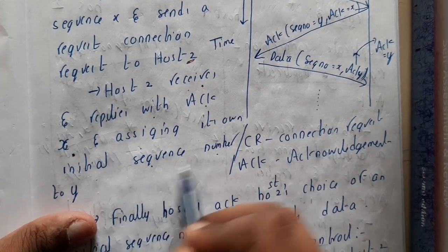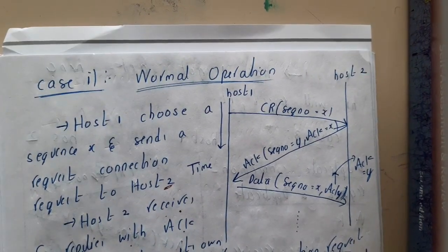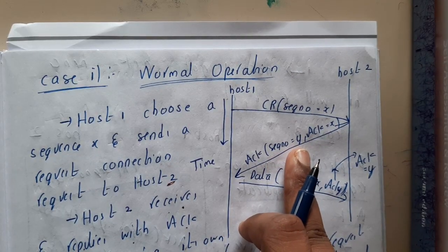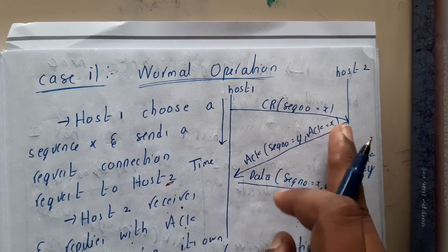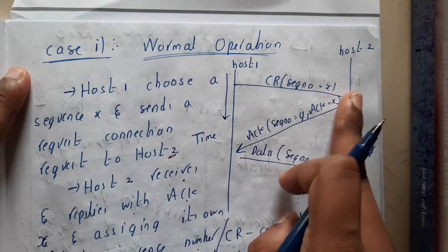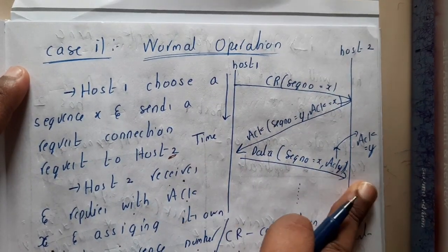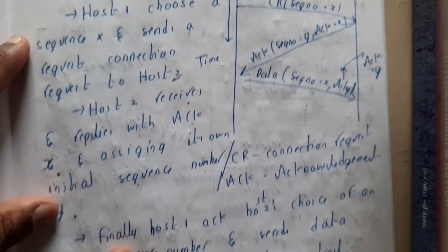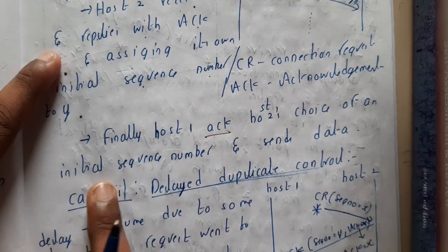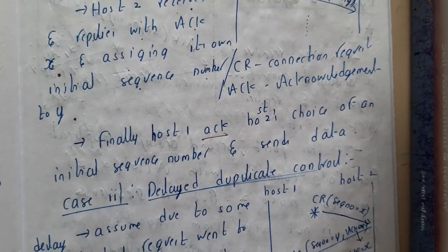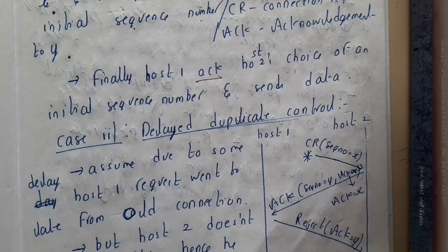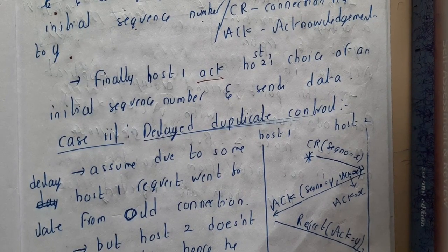Host 2 sends the acknowledgement of sequence number X and says its own sequence number is Y. After that, Host 1 acknowledges and chooses an initial sequence number and starts sending the data. This is the three-way handshake. You might think this is really simple — he sends a request, accepts it, sends acknowledgement, sends data — but there are some unintentional issues that could happen.